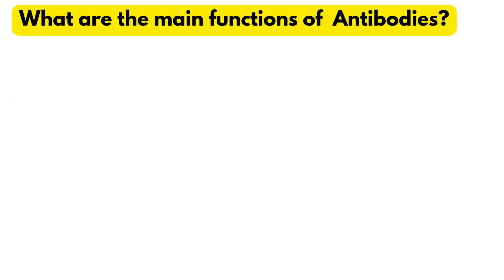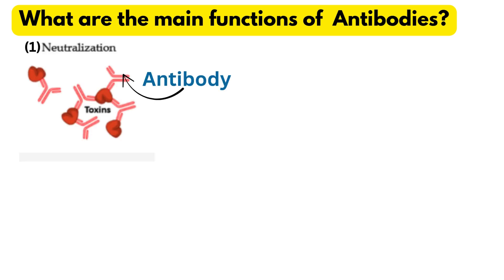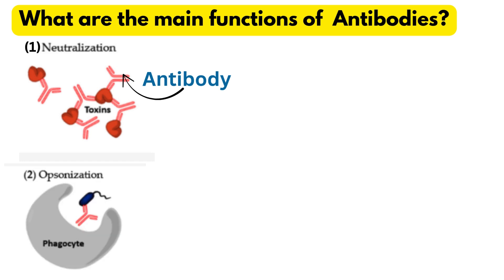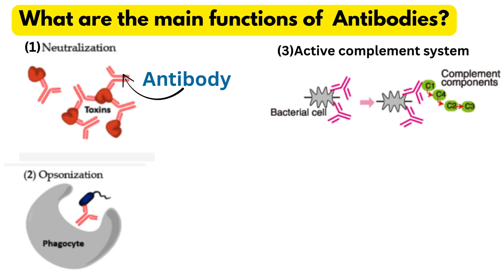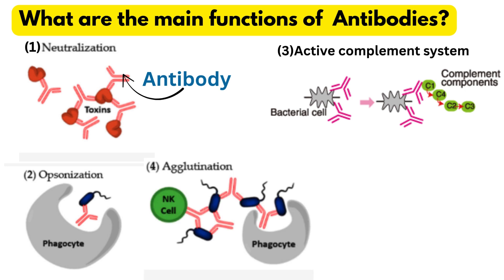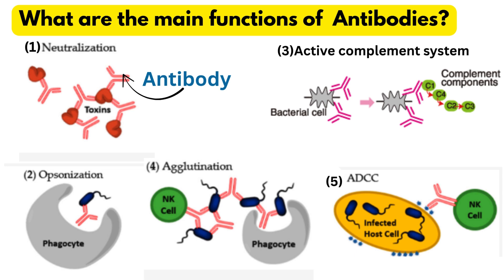Next question: what are the functions of antibodies? Antibodies perform neutralization, blocking toxins and viruses. Second, antibodies coat pathogens for phagocytosis, which is known as opsonization. Antibodies activate the complement system to kill microbes. Antibodies clump pathogens together for easy removal. And antibodies help our immune cells to kill infected or abnormal cells.